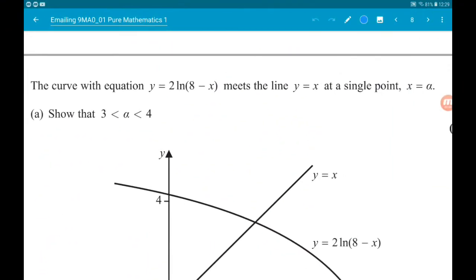In question four we have a bit of numerical methods, iteration, and a cobweb diagram. The curve with equation y equals 2 log 8 minus x meets the line y equals x at a single point where x is equal to alpha. Part A wants us to show that alpha is greater than three but less than four.